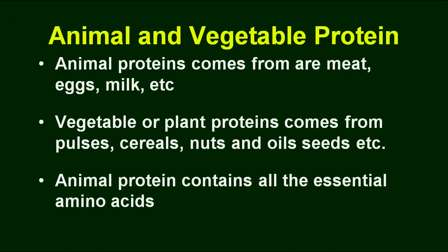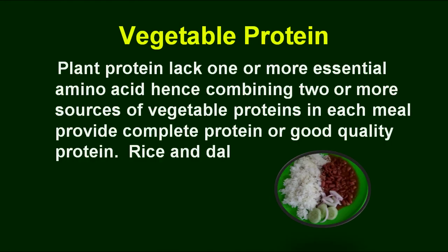Animal proteins come from meat, egg, milk, etc. We distinguish these two types of proteins especially because animal proteins contain all the essential amino acids, whereas plant proteins lack one or more amino acids. So plant proteins need to be combined to get good quality protein from vegetable sources. As in the Indian diet, we try to consume rice and dal, or chapati and dal, so that becomes a good quality protein.